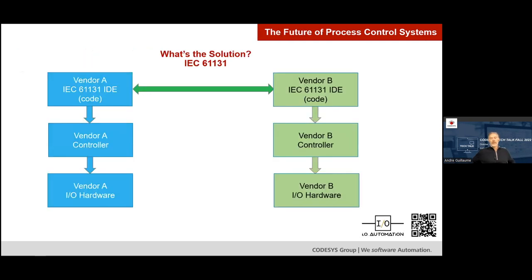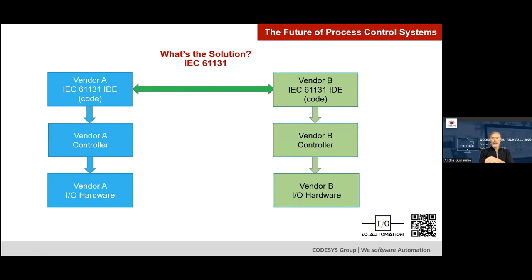The solution is the industry standard IEC 61131. With this standard for automation code, we can develop code in Vendor A's IEC 61131-compatible development environment, export it to a formatted XML file, import it into Vendor B's IEC 61131 programming environment, compile it, and continue on with that controller for the plant or process. This gets us part of the way there — we can now port code from one vendor's development environment to another's — but it still doesn't solve the problem of hardware dependence.